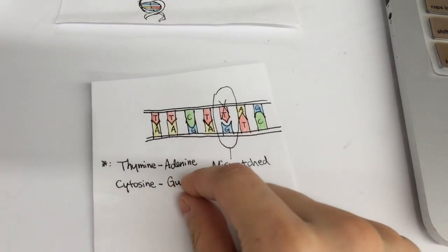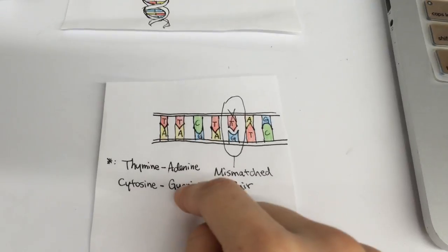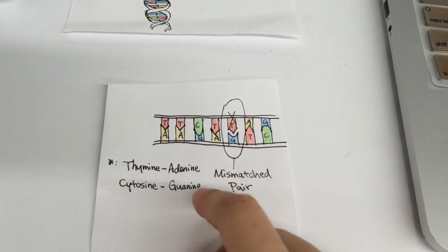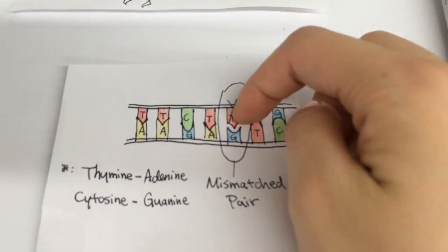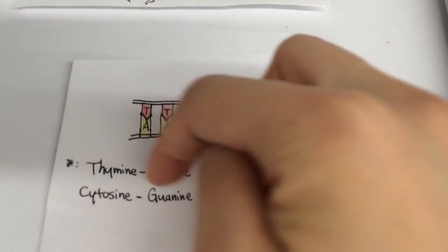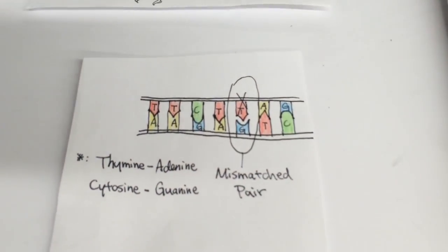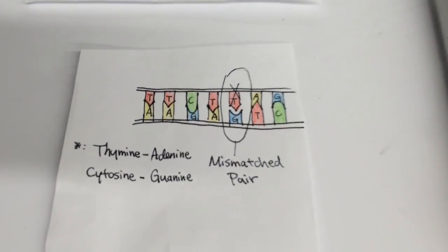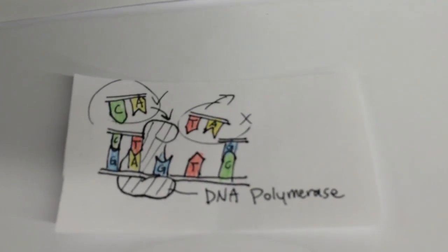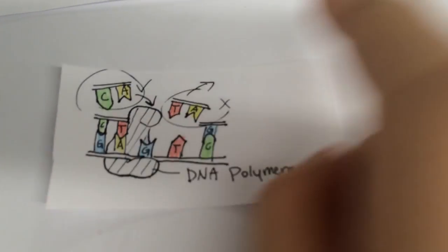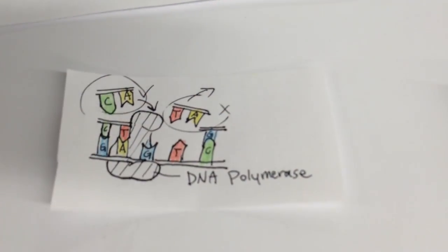Each of the four possible bases has a matching base to pair with. When a base is aligned with a base that does not match it, a miscopying error occurs. Still, even with the error, one does not simply get cancer. The DNA polymerase has a proofread function that checks its work and fixes the error, which decreases the overall error rate.